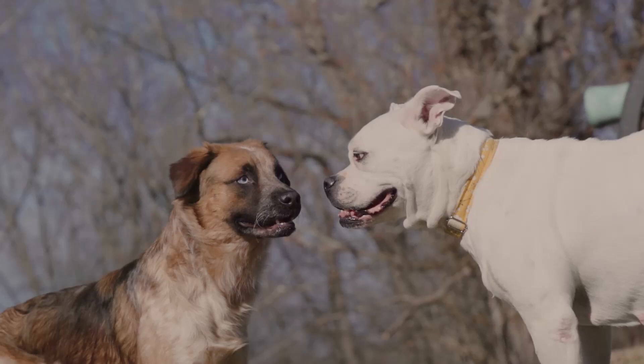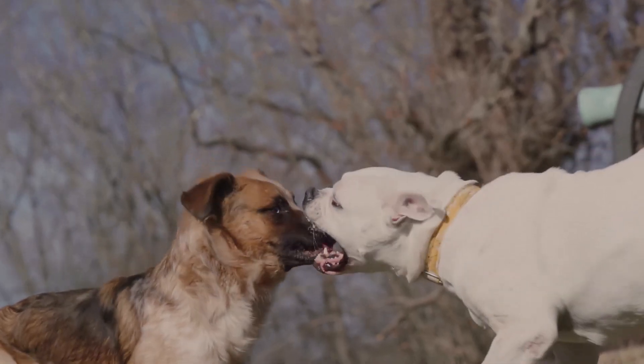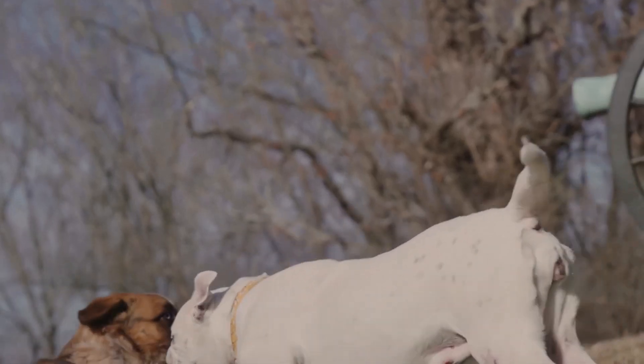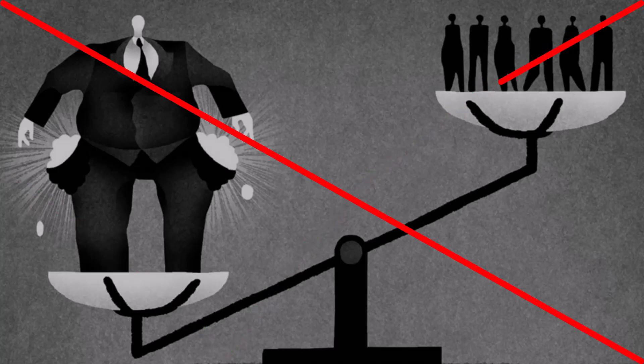Individuals vary in their orientation to social domination — the degree to which they support or reject power differences between groups. In experiments, people who support the unequal distribution of power will take less if it means out-group members will also receive less. But those who resist power differences tend to be more cooperative when playing conflict simulations.